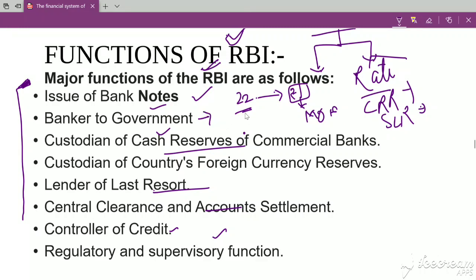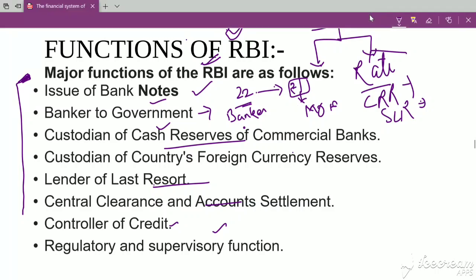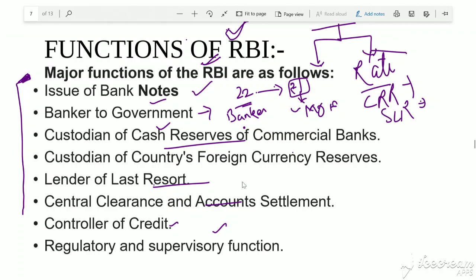As banker to the government, RBI acts as a banker and advisory agent. It provides advice to the government — both central and state governments. RBI helps the government float new loans, manage public debt, and perform related financial functions.